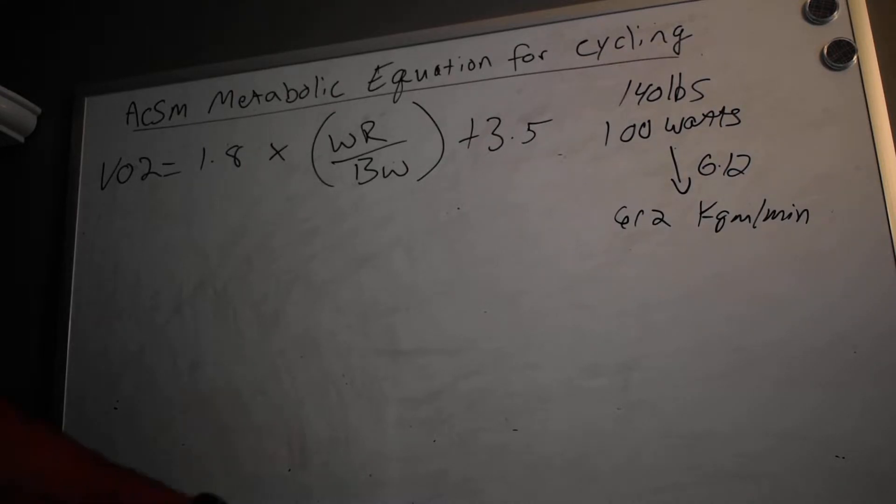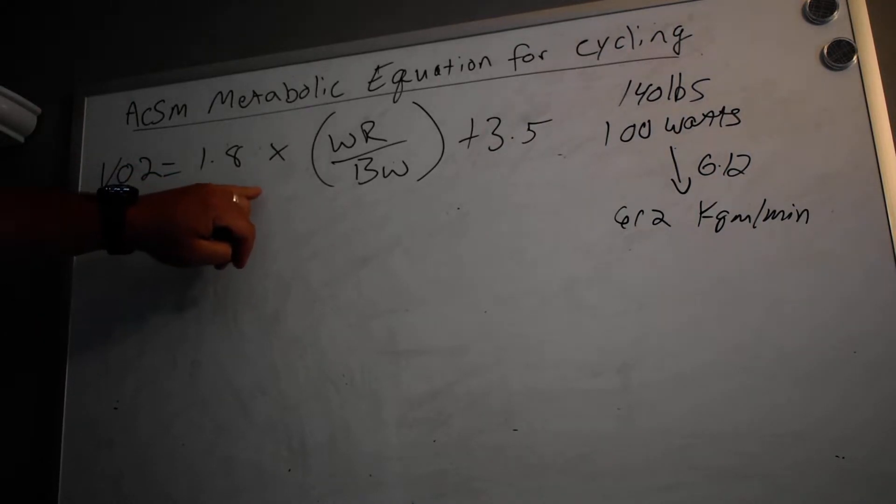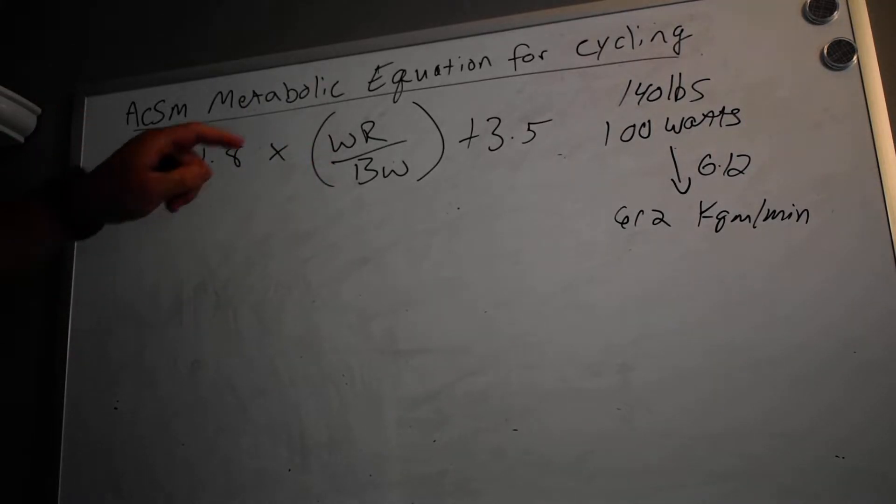The reason why we need the kilogram meters per minute is because in the equation VO2 equals 1.8 times—this WR is work rate—the work rate has to be in kilogram meters per minute. It cannot be in watts. The other conversion we would need to do in this one is for the body weight, because the body weight (which is BW) has to be in kilograms. It cannot be in pounds.